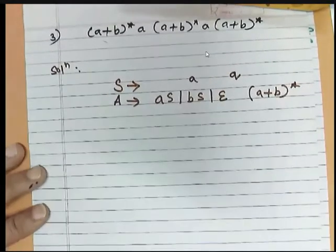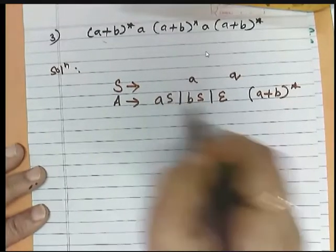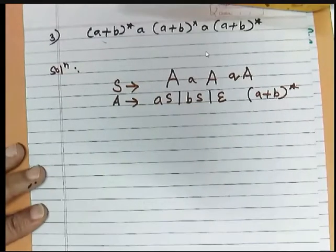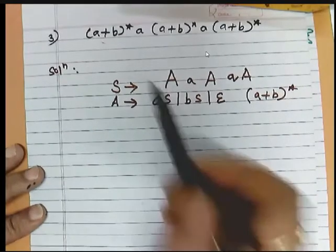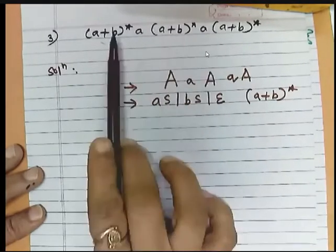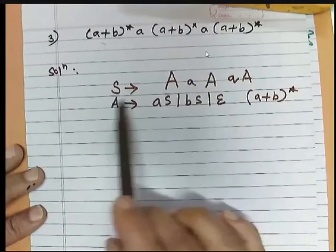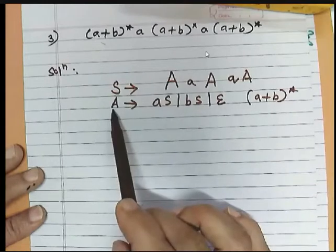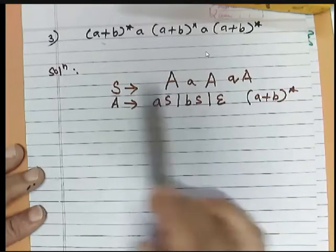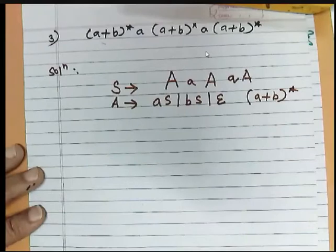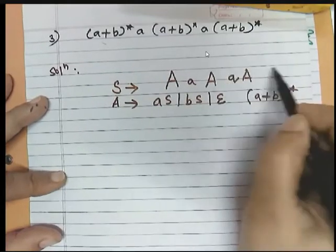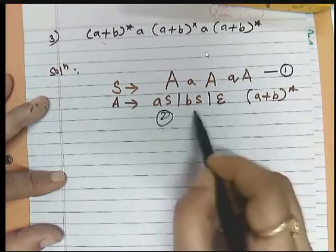Whenever we have such an expression where some compulsory part is there, in that case you have to first write down the production for the optional part, and then call it in a production where it takes the compulsory part from the start symbol. So there will be — this will be your first rule, and then you will be adding: this is rule one, this is rule two, rule three, and rule four.